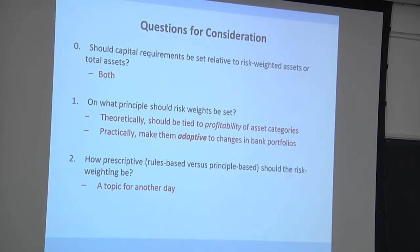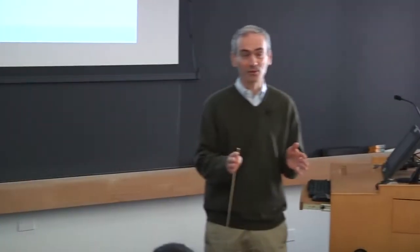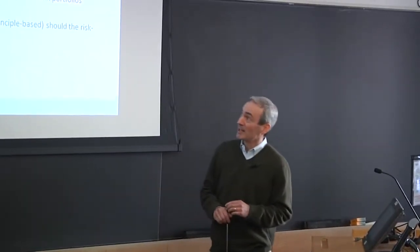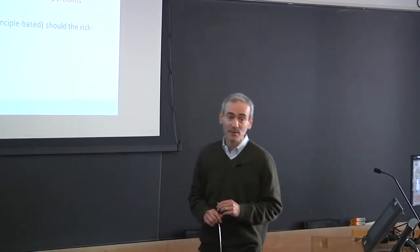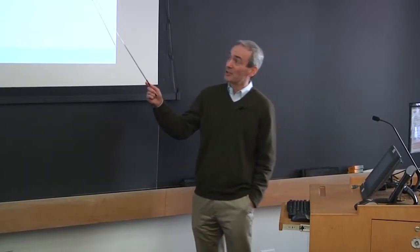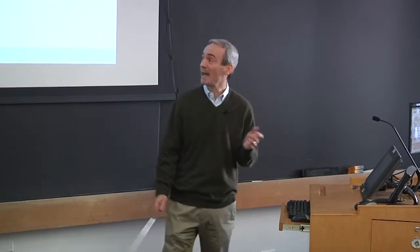So, if we're going to have risk weights, well, on what principles should these be set? So, as I mentioned before, in our analysis, theoretically, it turns out that you want to set the risk weights proportional to profitability and not proportional to risk. And I'll say a little bit about why that's true. And then, as I said already, the practical recommendation that comes out of this is that they should be adaptive to changes in bank portfolios. So, as you see banks doing more and more investment in one kind of asset category, increase the risk weight on that asset category. There's a whole other set of issues which comes down to how prescriptive should they be versus how much discretion you should leave to banks. That's a topic, an important topic, but it's a topic for another day.